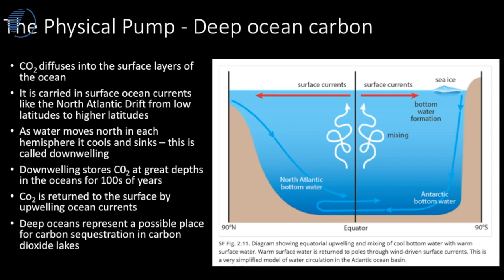Now let's think about the physical pump. Here we have the equator; as we move north, surface currents carry warm water from the surface oceans — where solar heating is most intense — to the North Pole, and similarly to Antarctica in the Southern Hemisphere. At the poles, we get downwelling currents that carry ocean water down into the deep oceans, taking carbon dioxide with them. This represents the physical pump of carbon dioxide being stored in the deep ocean. Those deep ocean currents circulate very slowly over hundreds of years before carbon is released back into surface waters.